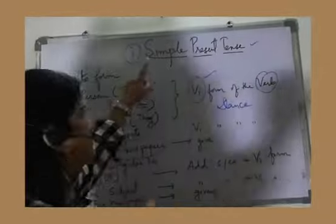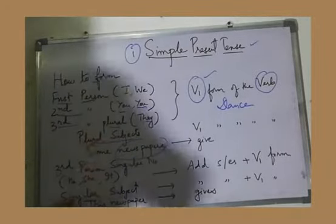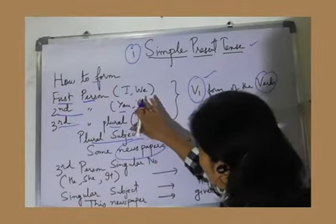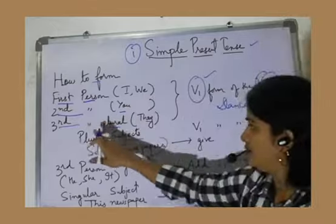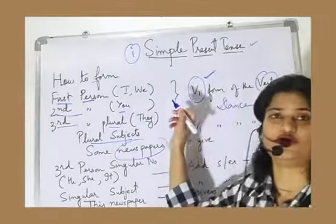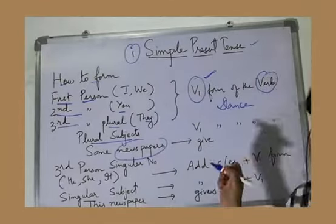How to form simple present tense? First person, singular I, plural we. Second person, singular and plural both, you only. Third person plural, they. With all these, we use V1 form of the verb. That means the root form of the verb.